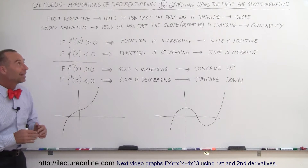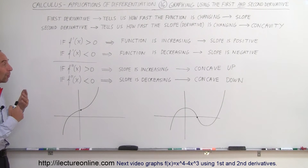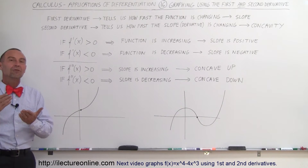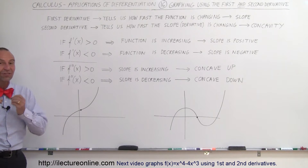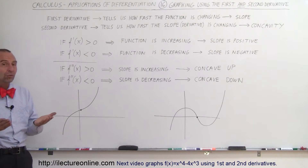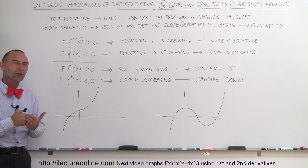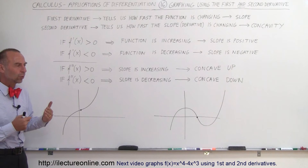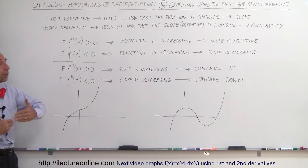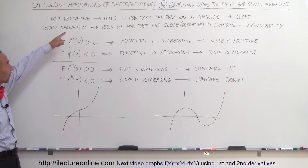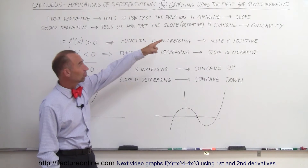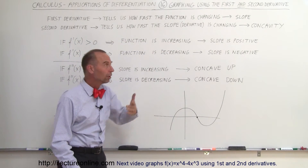Welcome to ElectronLine. Now we're going to learn some techniques of graphing that involves information we get from the second derivative. Remember, the first derivative gives you the slope of the function — it tells you whether or not the slope is increasing or decreasing. The first derivative tells us how fast the function is changing; it gives us the slope.